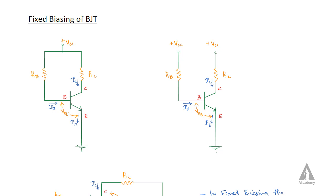This is our BJT — an NPN type BJT. Here you can see the direction of flow of emitter current. We are connecting a voltage source VCC to the base through RB and to the collector through RC. The emitter-base junction and collector-base junction are biased using VCC.